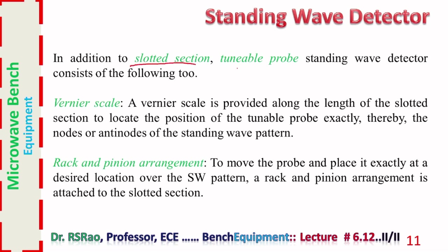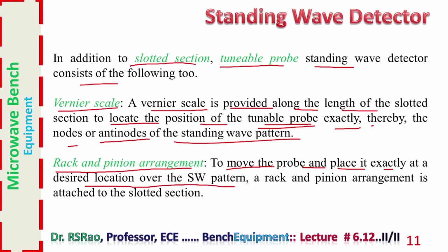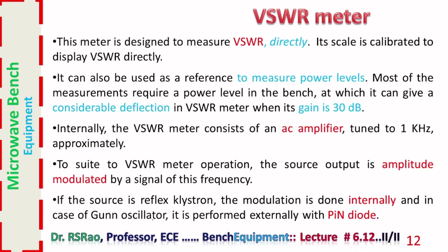In addition to the slotted section and tunable probe, the standing wave detector consists of a vernier scale provided along the length of the slotted section to locate the position of the tunable probe exactly — thereby locating the nodes or anti-nodes of the standing wave pattern. A rack and pinion arrangement is attached to the slotted section to move the probe and place it exactly at a desired location.